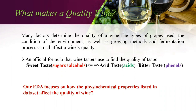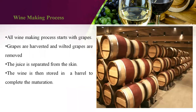What makes a quality wine? Many factors determine the quality of a wine — the types of grapes used, the condition of the environment in which they are grown, and the fermentation process can all affect the wine's quality. The official formula for wine data is that there should be a balanced combination between sweet, acid, and bitter taste. Our EDA focuses on how the physiochemical properties listed in the dataset affect the quality of wine. Before going into EDA in detail, let's have a brief overview of the wine-making process.